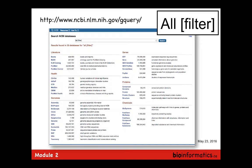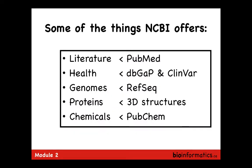At NCBI you can get an up-to-date summary of how many records are in each of their databases using the ALT filter on their website. NCBI offers literature through PubMed, health records through dbGaP and ClinVar, and RefSeq — the reference sequences for all genomes, not just human but all organisms — covering RNA, protein, and genomes. They also have proteins, 3D structures, protein sequences, chemicals through PubChem, and more. The whole computational space is served by NCBI, EBI, and many other players.